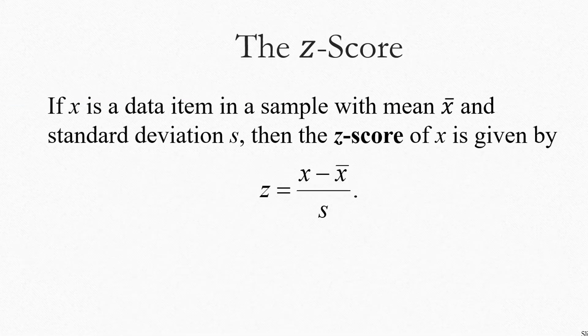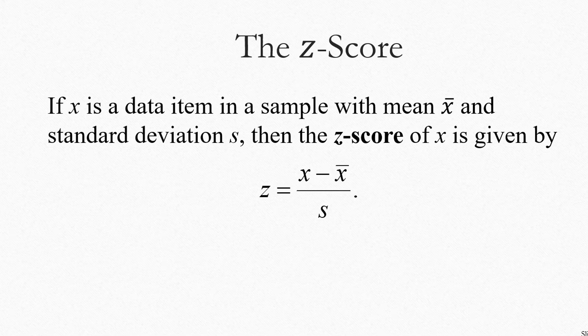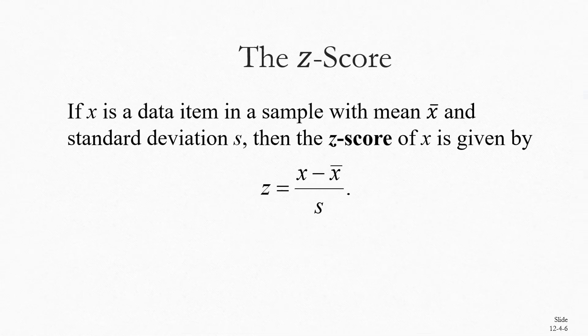This is a formula you're going to want to remember. We use it a lot to go back and forth between the data values and the number of standard deviations or Z scores of a particular data value.